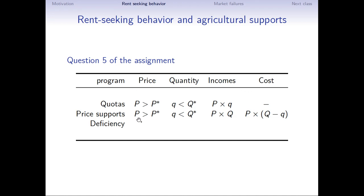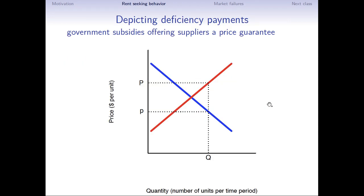And to summarize here for price supports, the price has gone up. The quantity purchased by consumers has fallen from the initial equilibrium. It's no different than under quotas, but it's less than they would have bought in a perfectly competitive market. The incomes of producers has gone up. Now it's P, capital P times capital Q. That's higher than in the initial equilibrium, and it's higher than under quotas. And then the cost of the government is the amount that it buys times the price it buys it at. So this is a more expensive program to run than quotas.